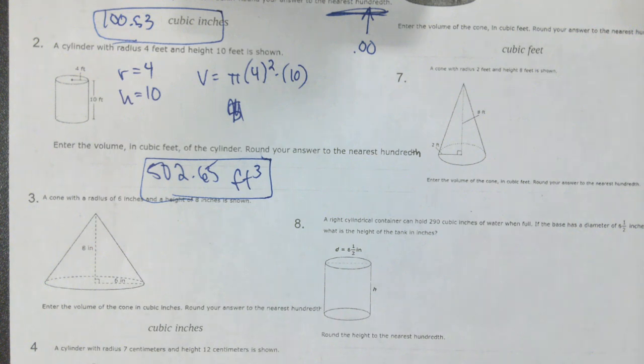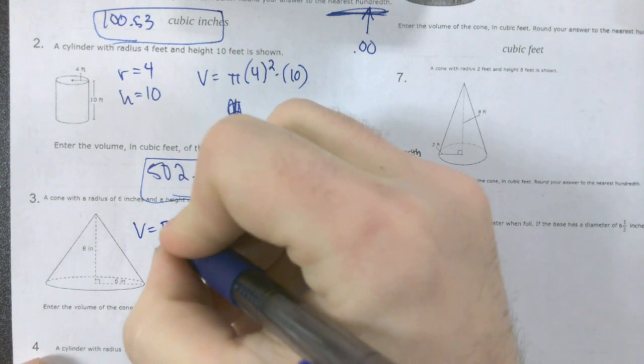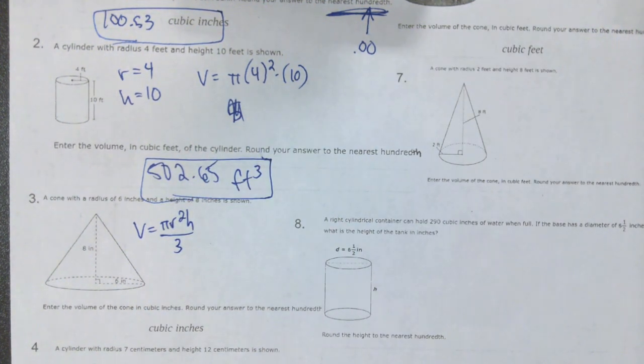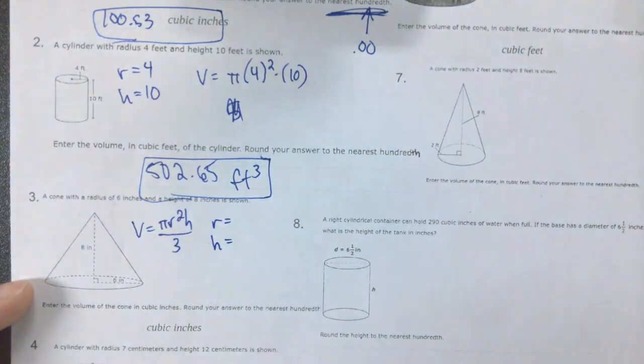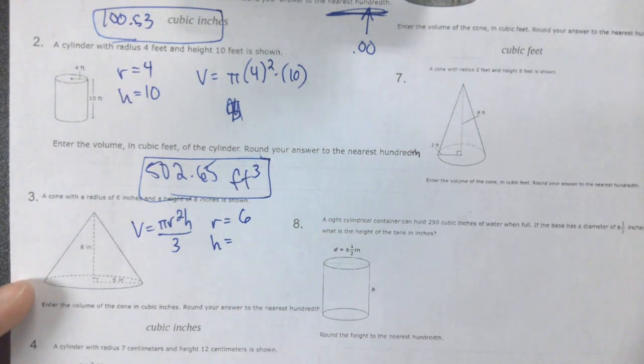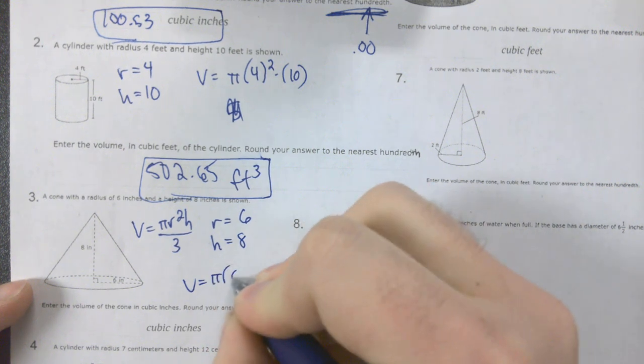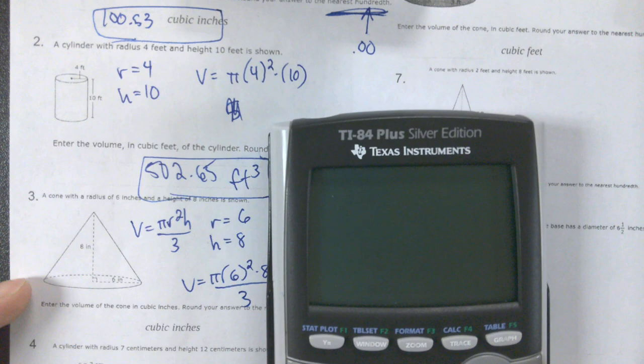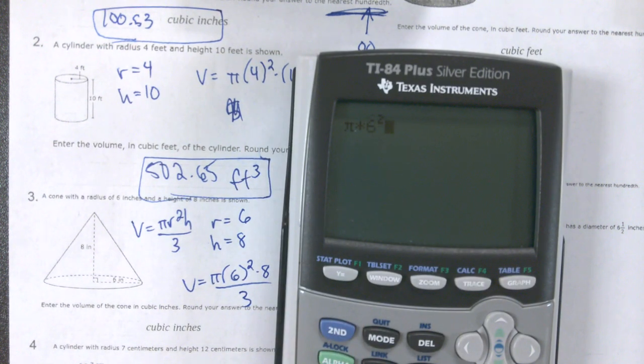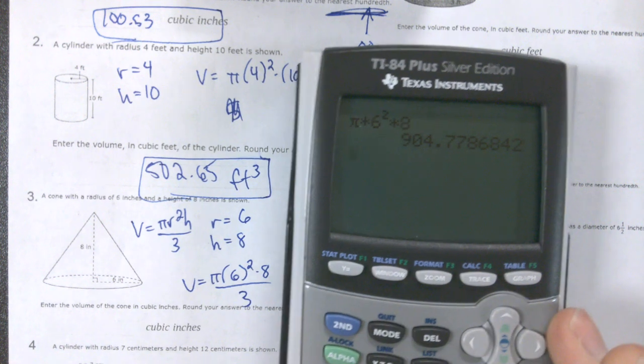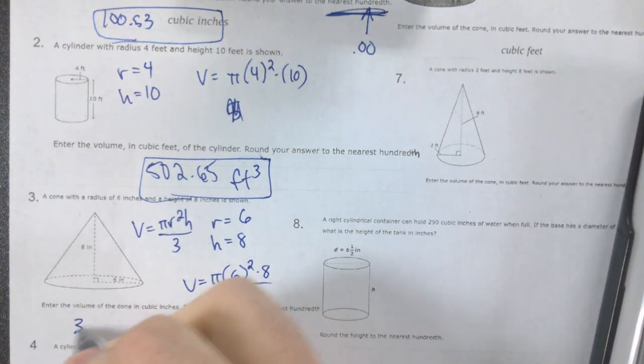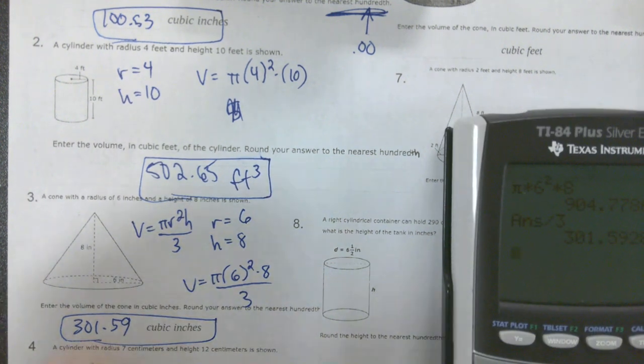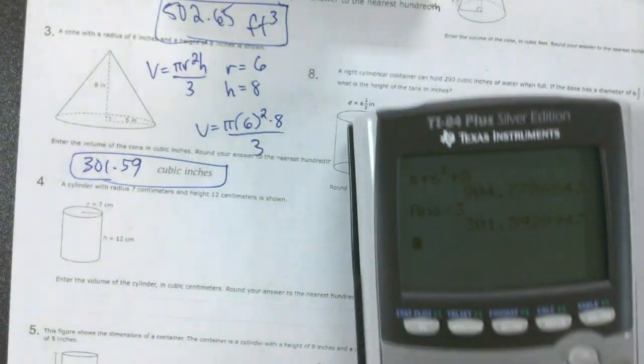Number three, we've got a cone. So like I said, we're going to do the same exact formula, pi r squared h, but we're going to divide the whole thing by 3, because if you remember from that video, we saw that the volume of three cones fits into one cylinder of the same size. What's my radius for this cone? 6, what's my height? 8. So we'll do pi times 6 squared times 8 divided by 3.